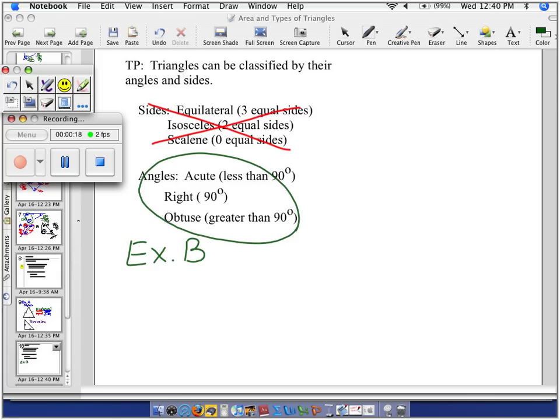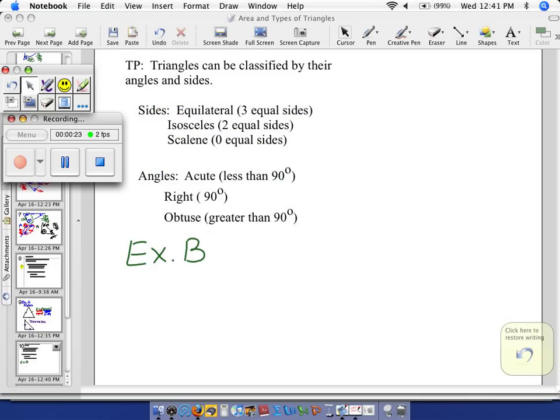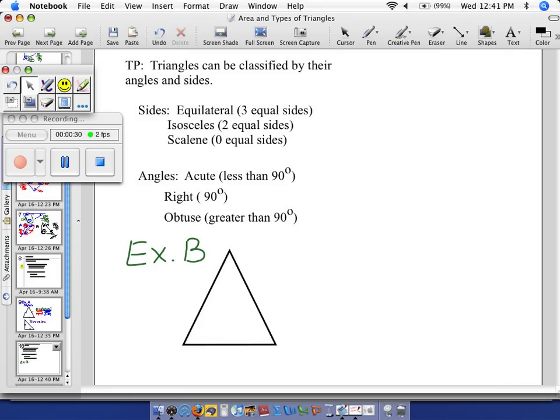A triangle that has acute angles means all three angles are acute. For example here, this triangle, all my angles are acute. Acute means less than 90.